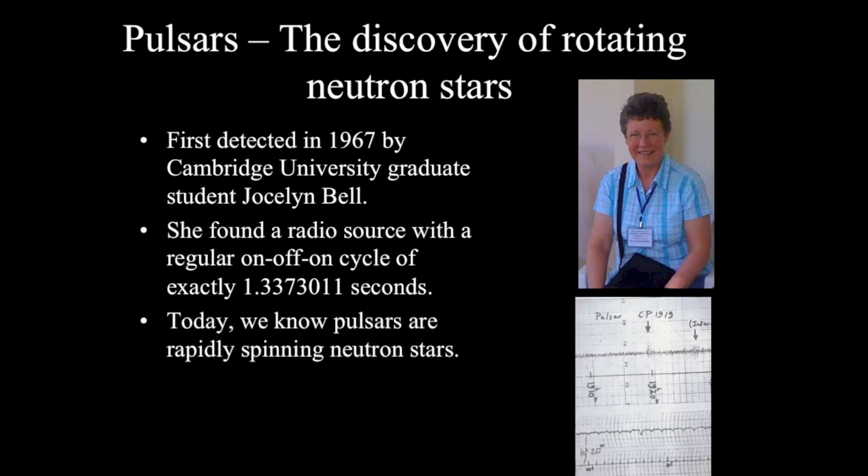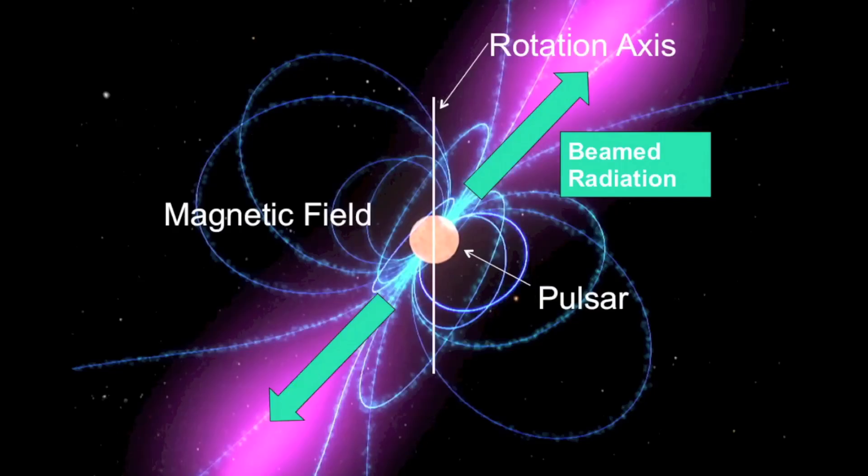Today we know objects like this are rapidly spinning neutron stars that are continuously beaming radio emission out into space. And as they spin, we get a pulse every time they rotate. The image that I'm showing you right now is a depiction of a pulsar or a neutron star that's spinning. A neutron star has an extremely strong magnetic field with a north pole and a south pole, which is typically offset from the rotational axis.